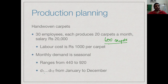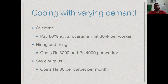The demand from January to December is stored as D1 for January, D2 for February, and so on to D12 for December — 12 known quantities representing how many carpets we can expect to sell each month. We need to come up with a strategy to cope with this varying demand in order to lose the least amount of money due to demand fluctuation.